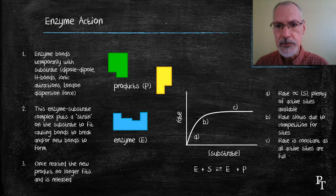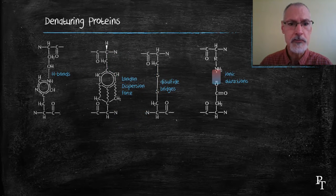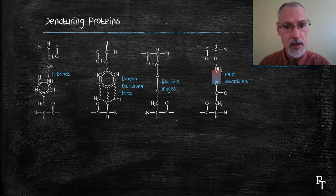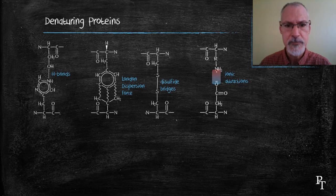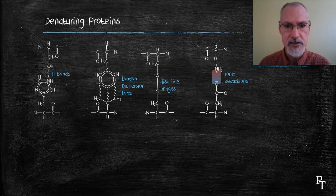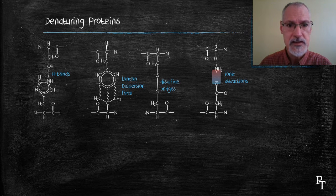Going back to tertiary structure, we can recall that there are four interactions that take place that help hold our molecule together. We can interfere with these interactions in three ways. Let's take a look at the first one.